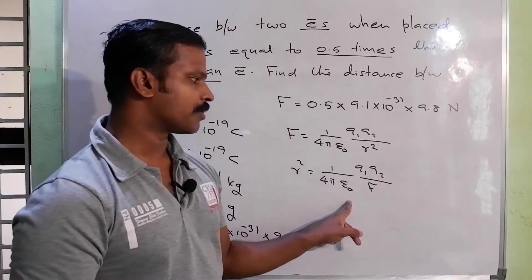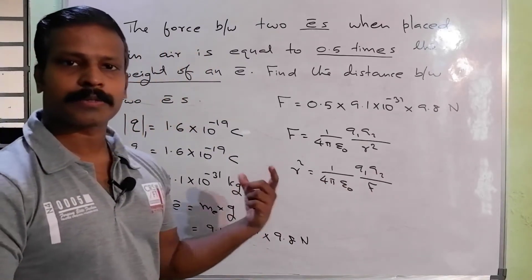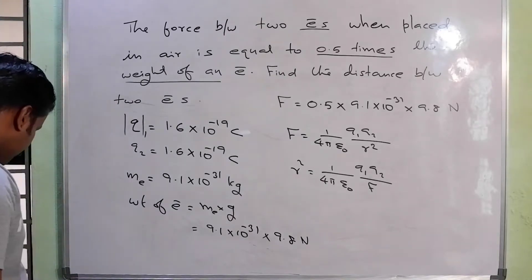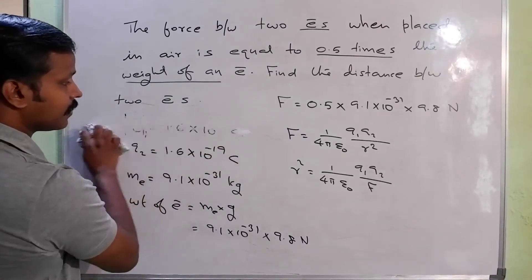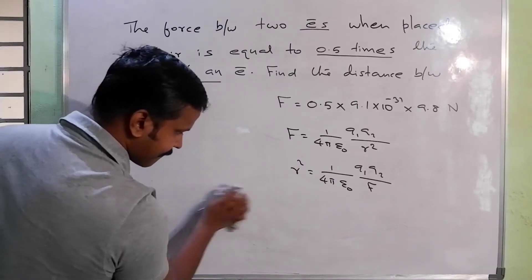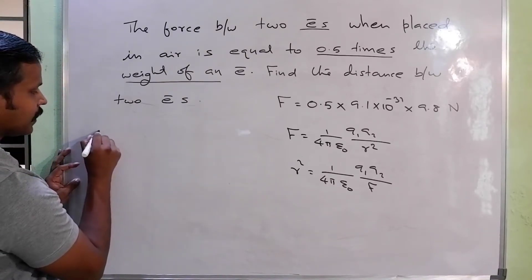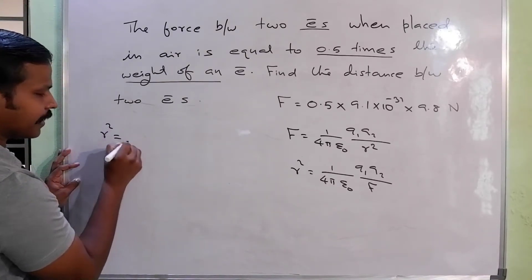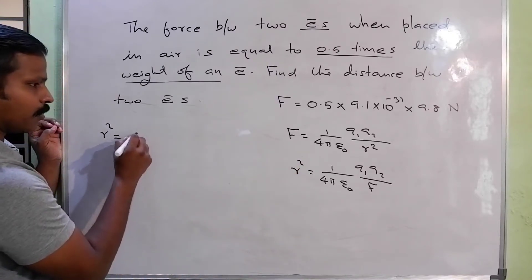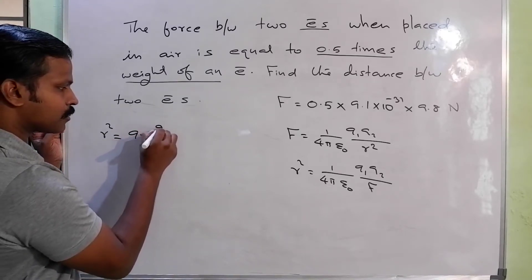R squared is equal to 1 over 4 pi epsilon-0 times Q1 Q2 divided by F. Now we will substitute the values. The constant 1 over 4 pi epsilon-0 equals 9 into 10 raised to 9.